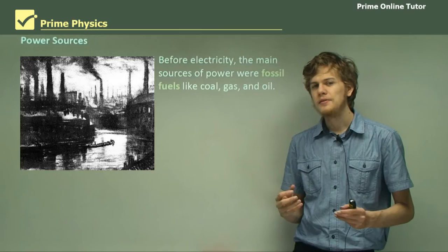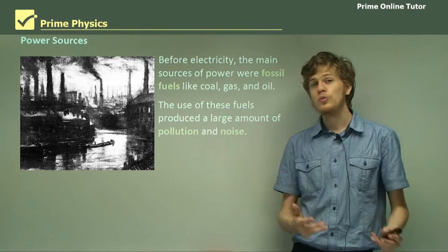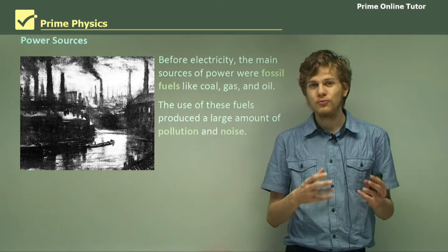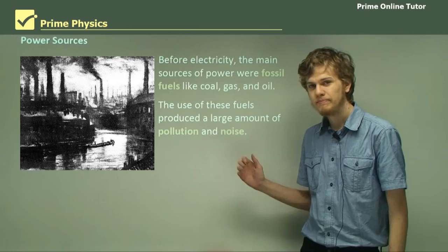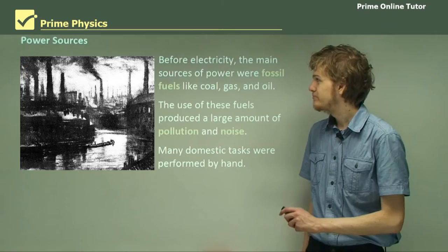Now before electricity, all the sources of power were things like coal, gas and oil, and these were all used in the steam engines of the time. The use of these fuels produced a large amount of pollution and noise. Because the mechanical energy couldn't be easily transported, all the pollution and noise occurred at the site of the factories and the steam engines, which tended to be right in the middle of the city. So many domestic tasks were still performed by hand, because of course you didn't want a big old dirty steam engine in your house.